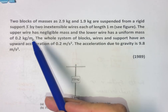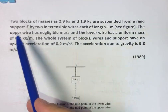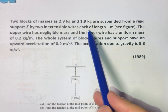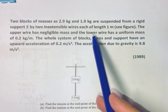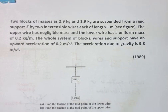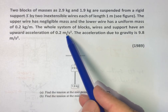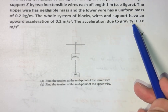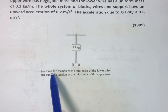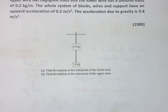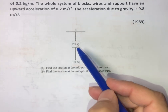Today's question: two blocks of masses 0.9 kg and 1.9 kg are suspended from a rigid support S by two inextensible wires, each of length 1 meter. The upper wire has negligible mass and the lower wire has a uniform mass of 0.2 kg per meter. The whole system of blocks, wires, and support has an upward acceleration of 0.2 m/s². We need to find the tension at the midpoint of the lower wire and the tension at the midpoint of the upper wire.